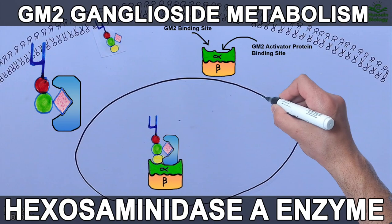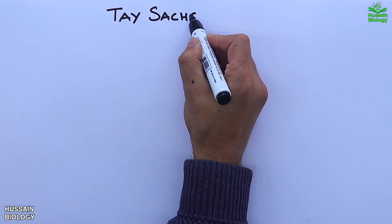In the previous video we discussed the lysosomal metabolism of GM2 gangliosides. If you want to watch that video first, the link is in the description. Now in this video we'll be discussing Tay-Sachs disease.